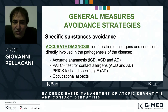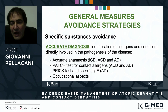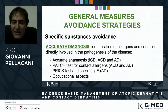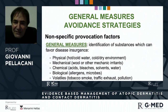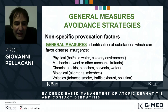Starting with general measures and avoidance strategies: if we want to set up an avoidance strategy, we need an accurate diagnosis. We need to know which specific agents are acting in the disease, so we have to perform tests — patch test, prick test — to know what is favoring and generating the disease. We must also keep general measures to avoid skin irritation from physical, mechanical factors, chemical agents, biologicals, volatiles, tobacco, and pollution.